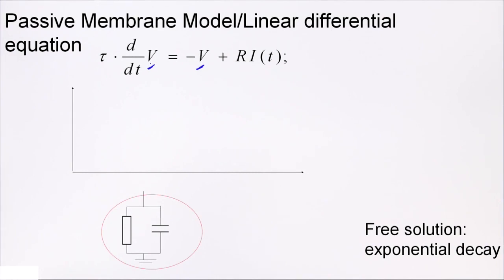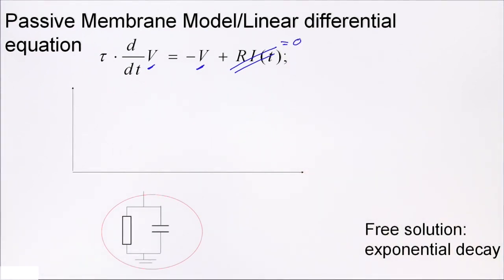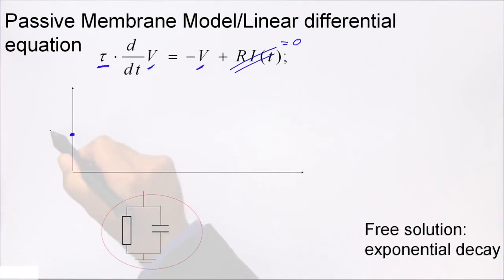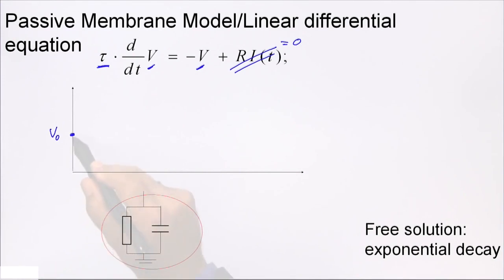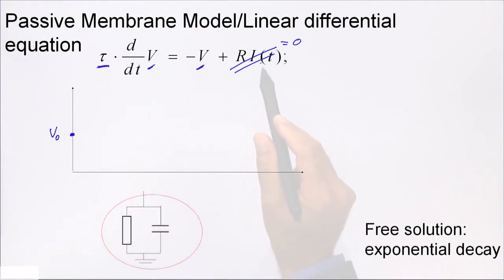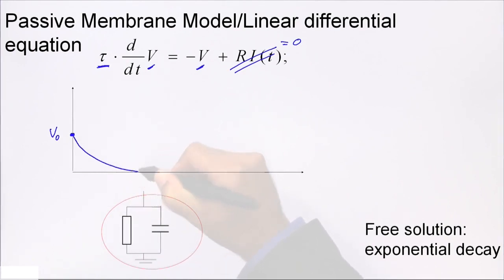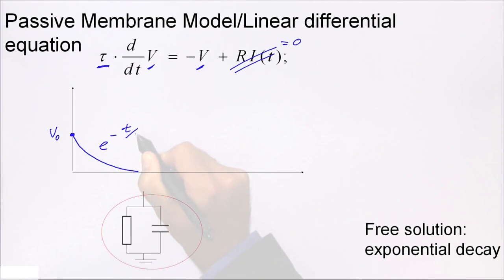To summarize, the passive membrane is described by a linear differential equation which describes the evolution of a voltage, with the battery voltage absorbed into the new variable V. Now let's look at the type of solutions this equation may have. Suppose there is no input. Starting at some value V0 and freely evolving with no further input, the solution is an exponential decay back to zero with time constant tau — the membrane time constant of the linear differential equation.